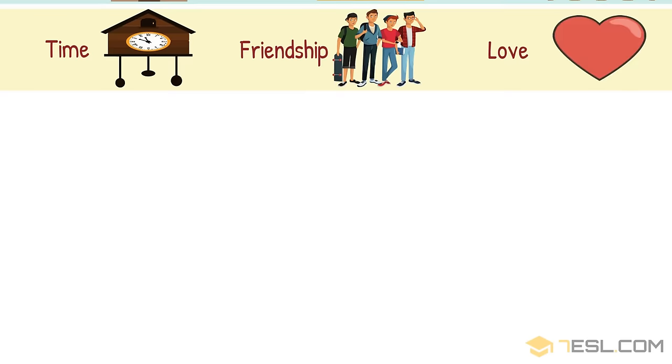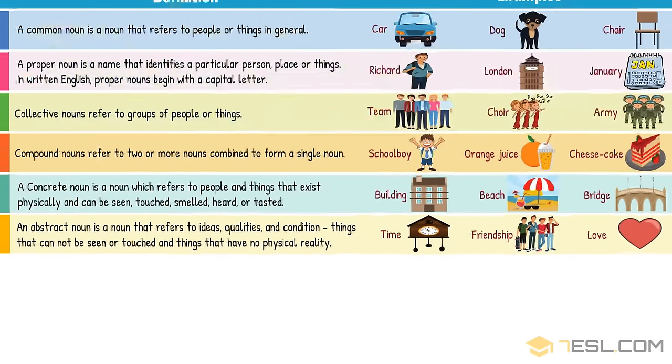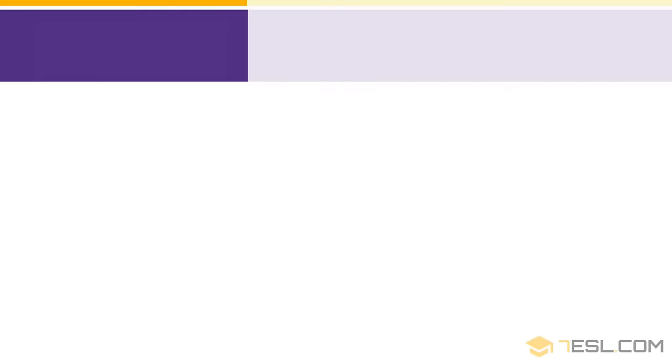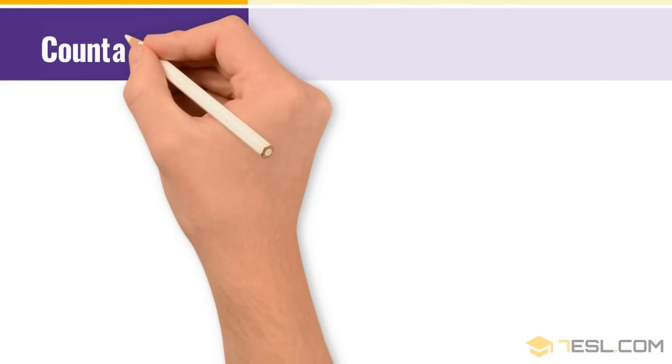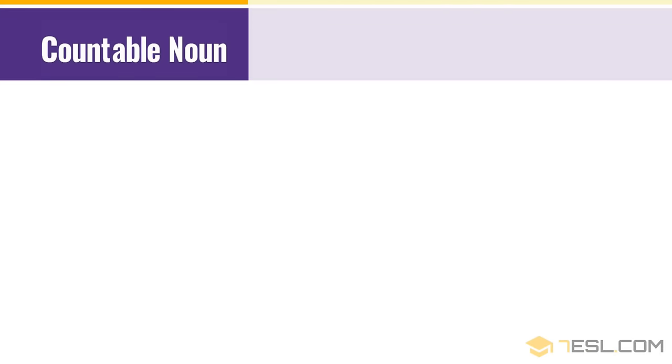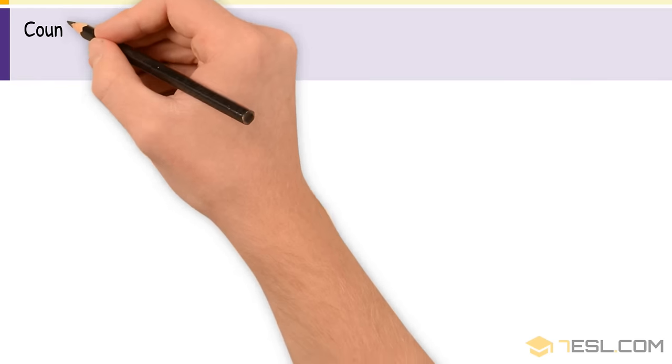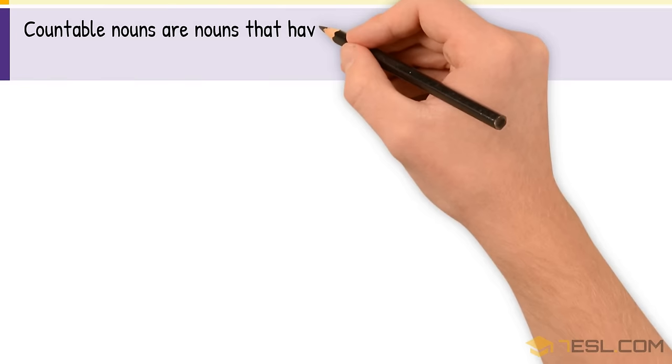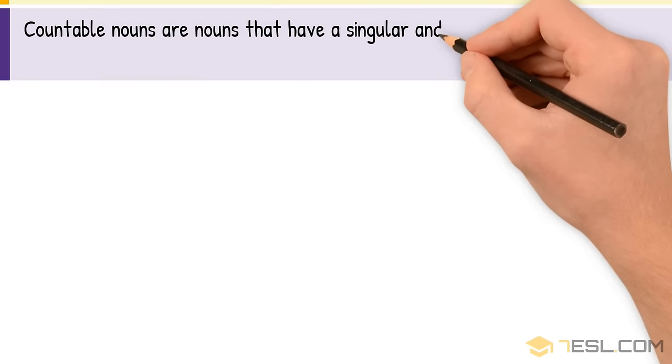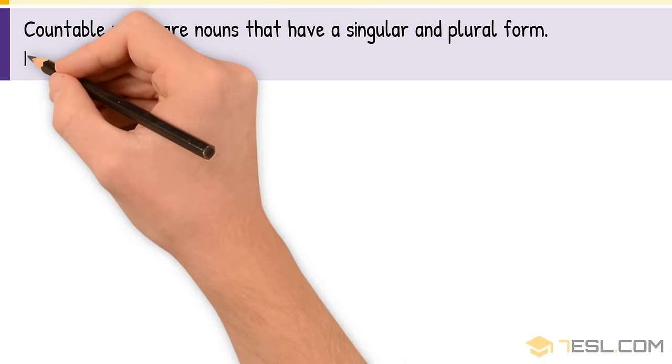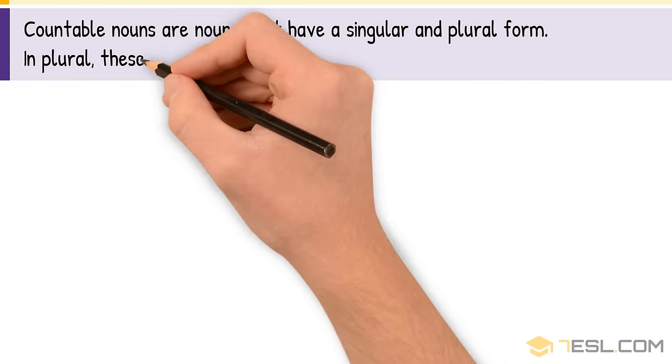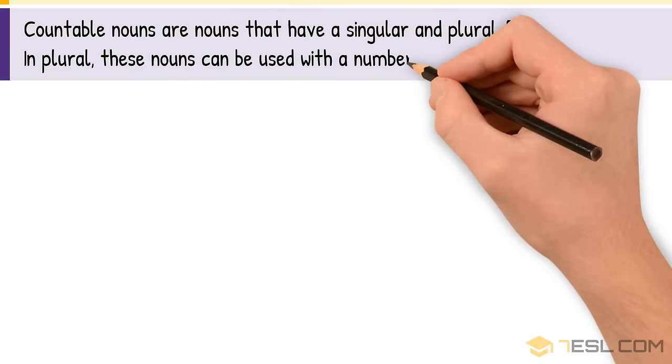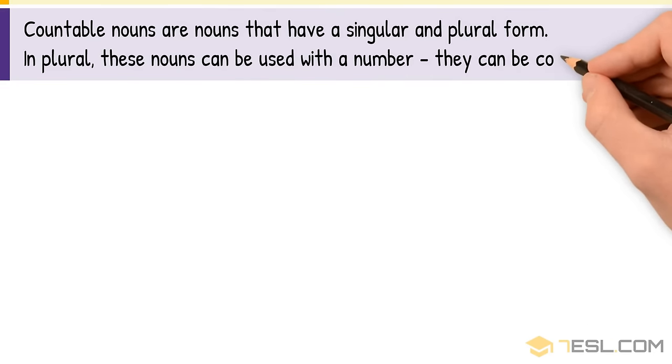Countable Noun. Countable nouns are nouns that have a singular and plural form. In plural, these nouns can be used with a number. They can be counted.